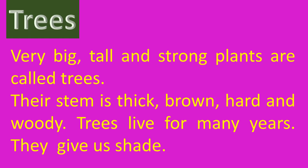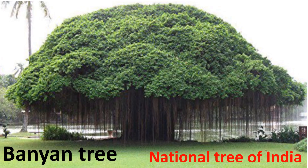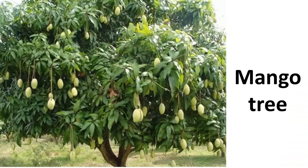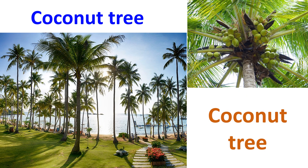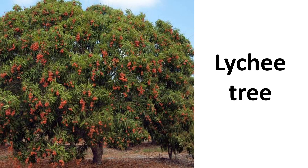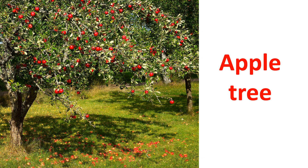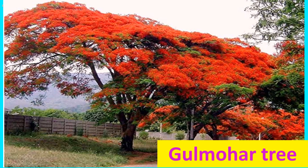Very big, tall, and strong plants are called trees. Their stem is thick, brown, hard, and woody. Trees live for many years and give us shade. Some examples are Banyan tree — the National Tree of India — Mango tree, Coconut tree, Litchi tree, Apple tree, and Gulmohar tree.